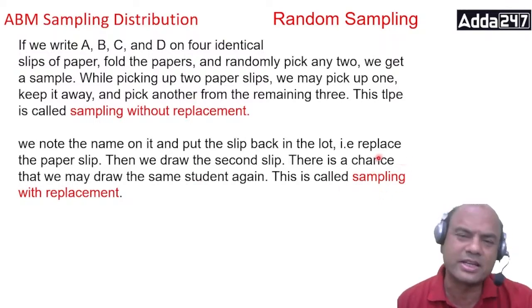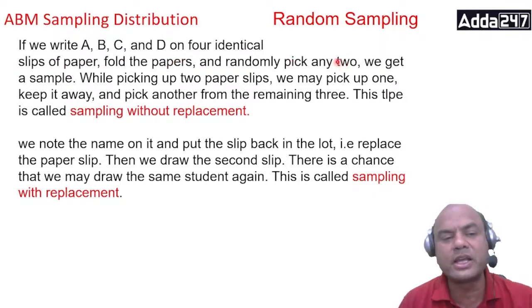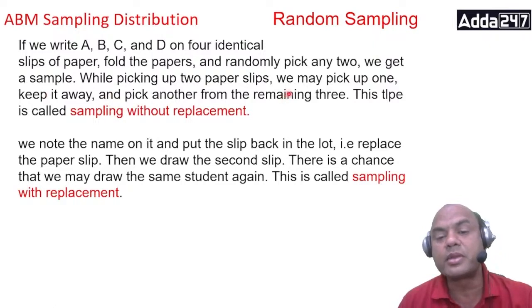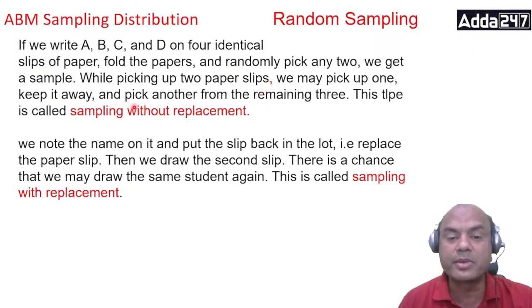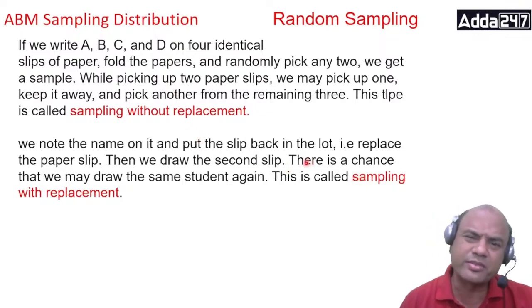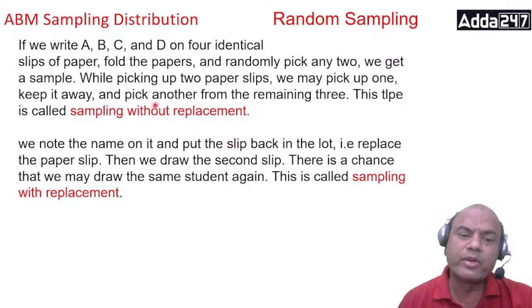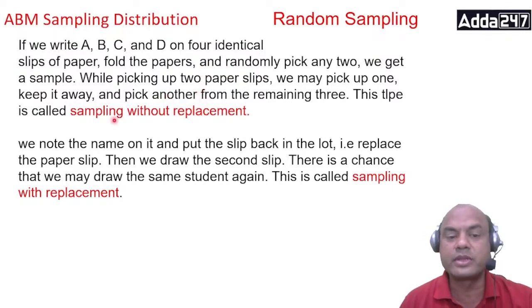Within simple random sampling, we have sampling without replacement and with replacement. Without replacement: I fold four papers A, B, C, D, randomly pick one, keep it away, then pick another from the remaining three — so once I pick one I won't put it back. With replacement: I pick a slip, see the name, and put it back in the same jar before picking again. That is with replacement.